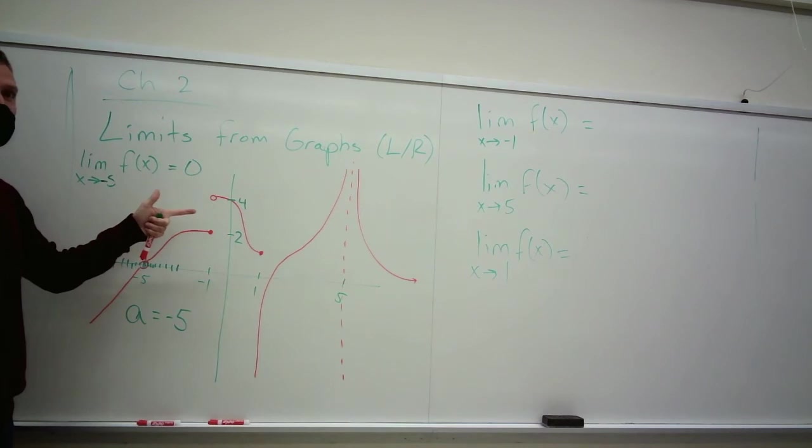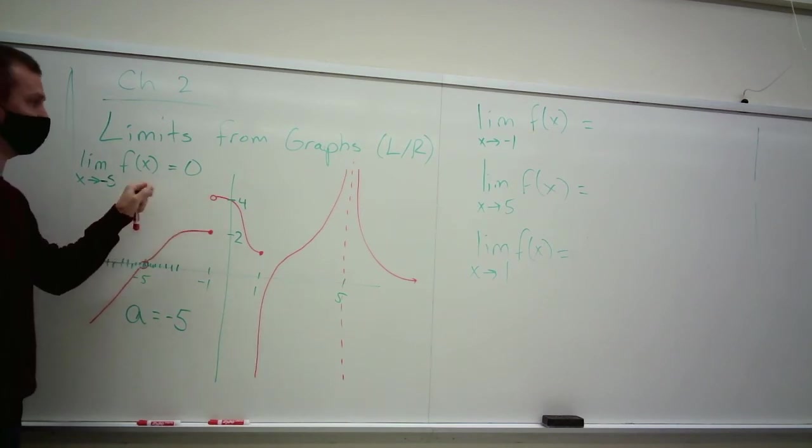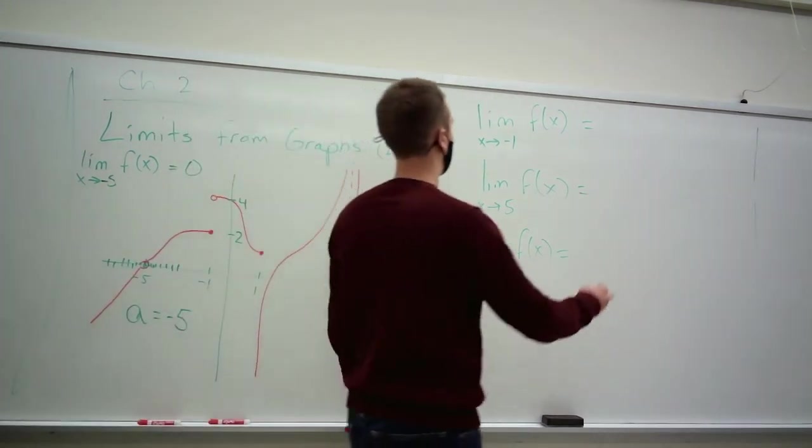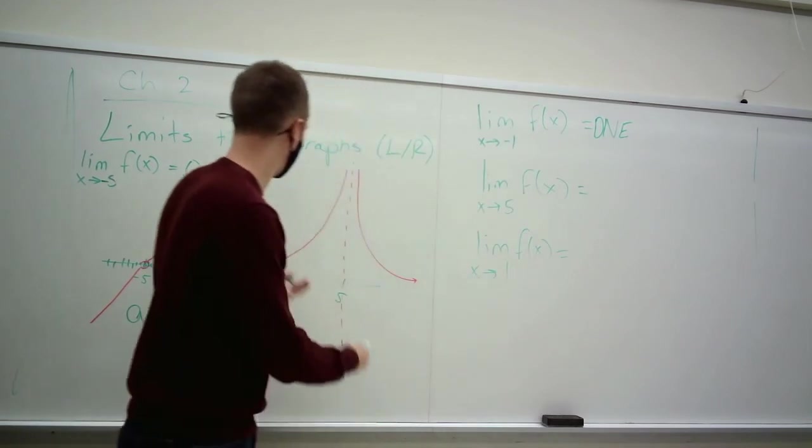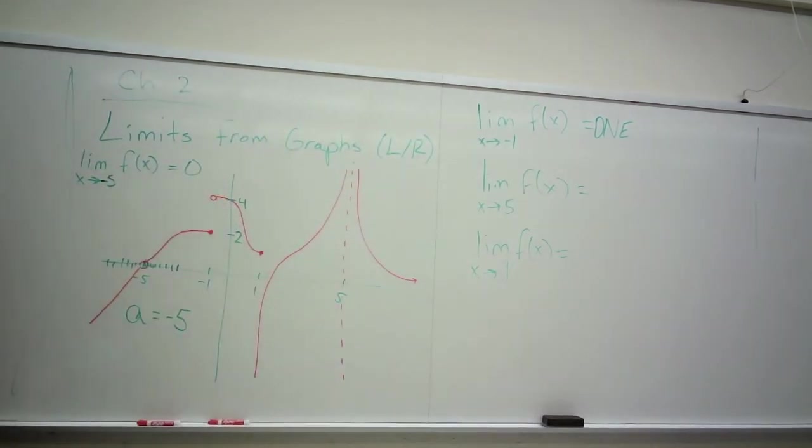It looks like it's approaching 4 from the right. You can't have a function which is two values at the same thing, right? Okay, so this does not exist.